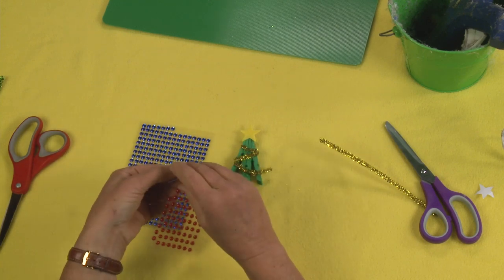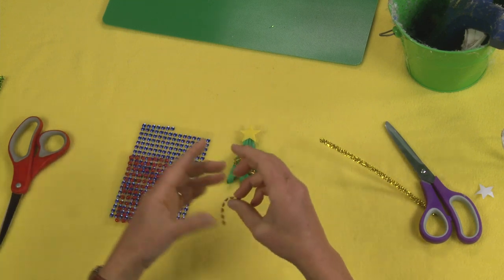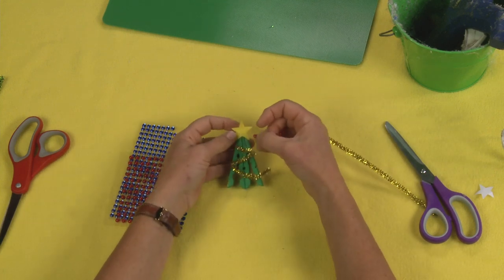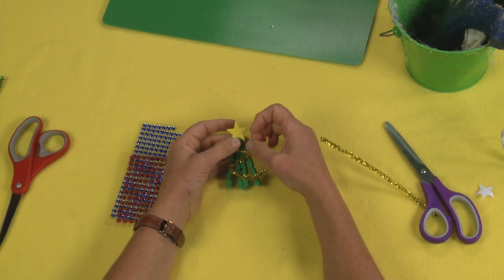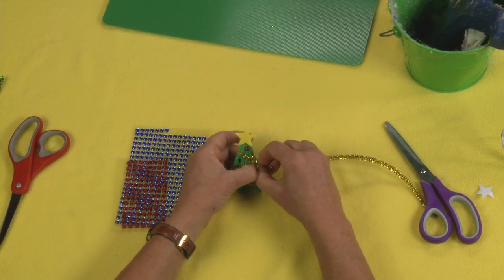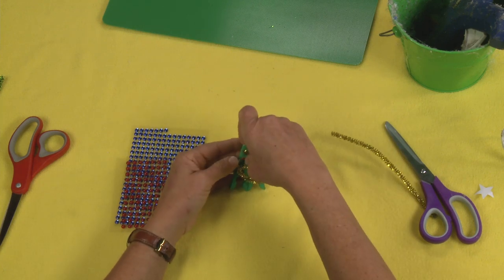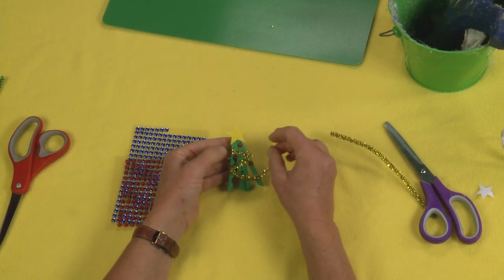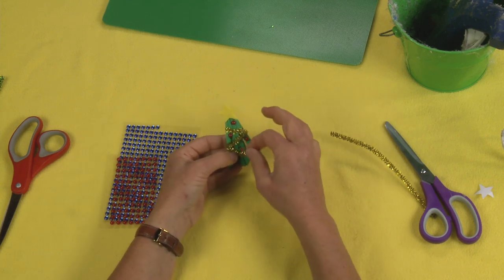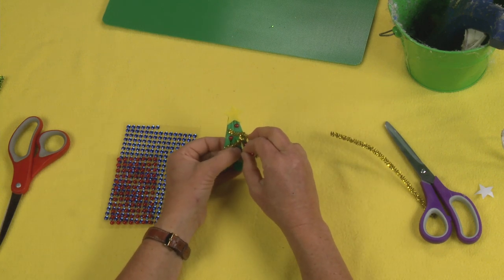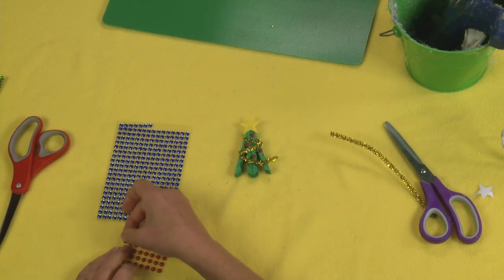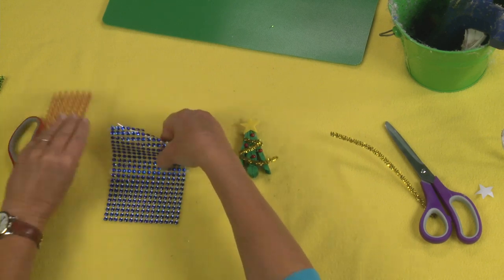And then you can come back with your pearls and your jewels and embellish. Now these are sticker ones that I got at the dollar store. You may not be able to find these, but don't dismay because you can use sequins, you can use stickers, you can use whatever you like that works. This is your little tree. You get to embellish it any way you want. So I've got my little balls on there. And I'm going to add some jewels.